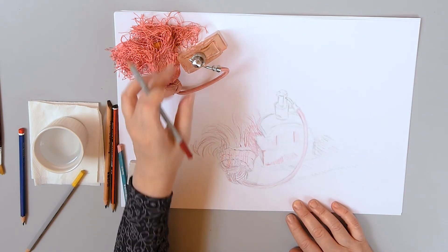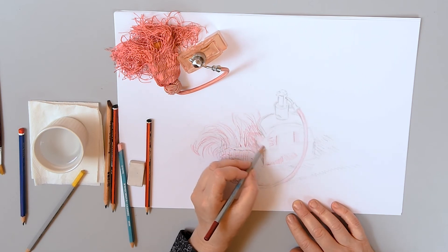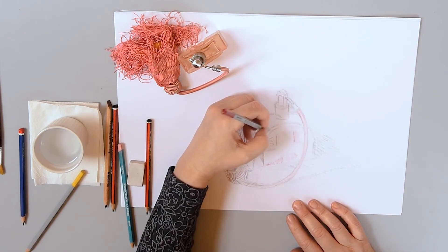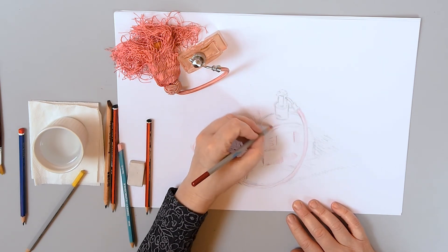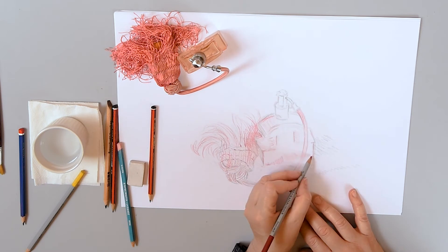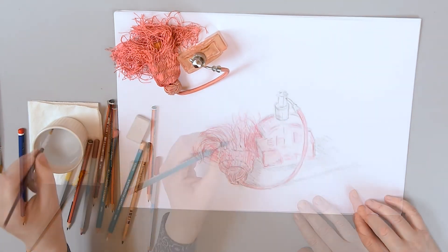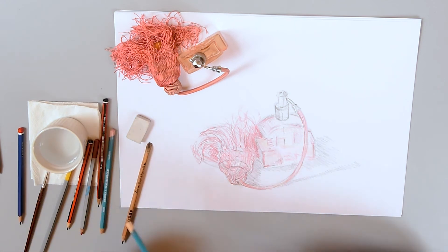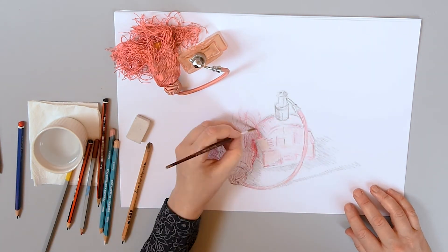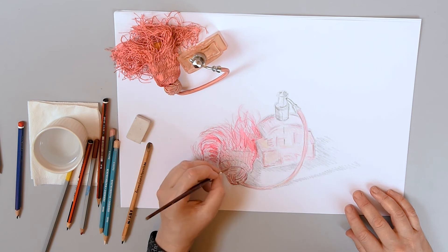So on this object, on this bottle, the light is actually changing a lot. So very simply just marking out some of the main lines that I can see. So I'm going to see what happens now. I'm going to add more colour here and put water on top. So I'm trying to follow the lines that I picked out.